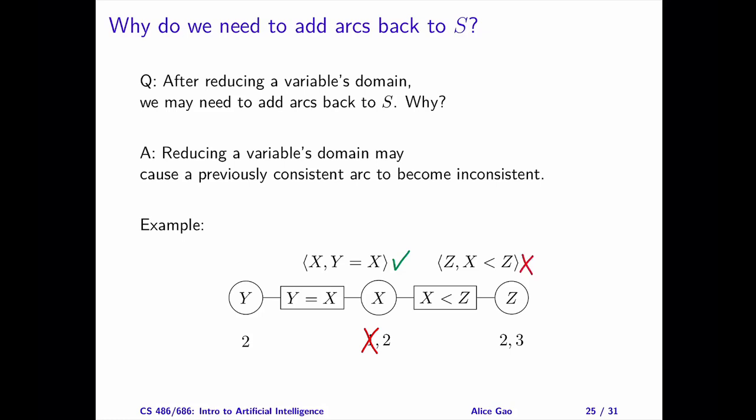Before reducing X's domain, the right arc was consistent. After reducing X's domain, the right arc becomes inconsistent. In this case, we need to add the right arc, Z with X is less than Z, back to S so that we can make it consistent by reducing Z's domain.